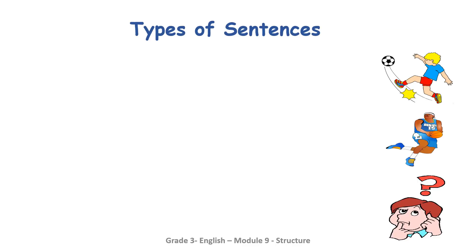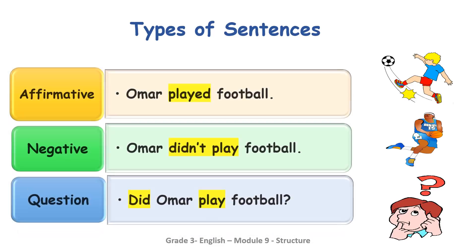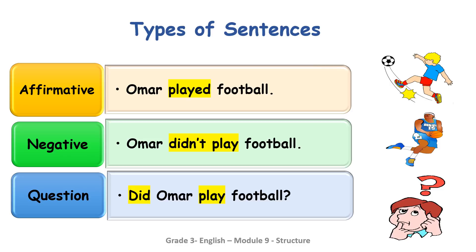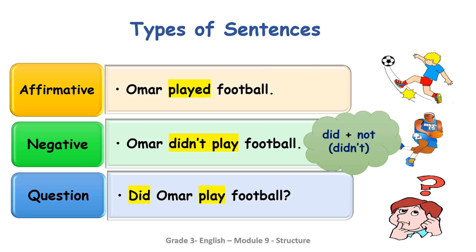Now we are going to revise the types of sentences in the simple past tense. They are affirmative, negative, and question. Affirmative: 'Omar played football.' Negative: 'Omar didn't play football.' When forming a negative sentence in the past tense, we add 'did not' and the other verb stays in the infinitive form — so we say 'didn't play,' not 'didn't played.' Yes/no questions always start with 'did': 'Did Omar play football?'